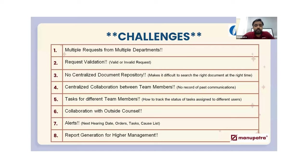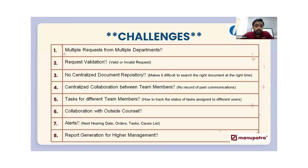Coming back to the outside counsel — there are matters where outside counsels are also involved. How do you make them part of your matter management? Next is alerts. You might have a next hearing date, an order that has been released, a task assigned by your legal head, or a cause list released on the e-court website. You'd otherwise have to search through 10,000+ e-court websites across India. Such tools make this information readily available.